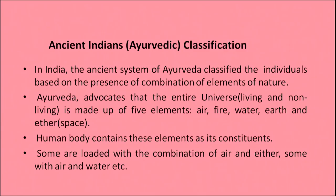According to the ancient Indian Ayurvedic classification, the ancient system of Ayurveda classified individuals based on the presence and combination of elements of nature. Ayurveda advocates that the entire universe — living and non-living — is made up of five elements: air, fire, water, earth and ether, known as space. The human body contains these elements as its constituents. Some are loaded with the combination of air and ether, some with fire and water, and so on, giving rise to different personality types.